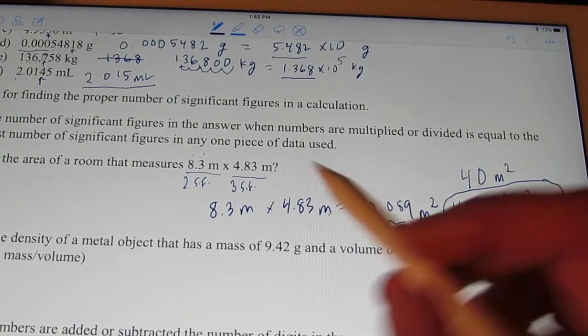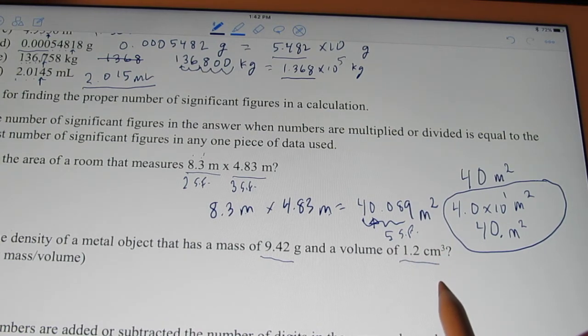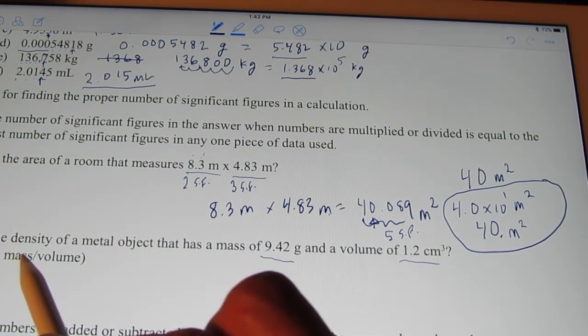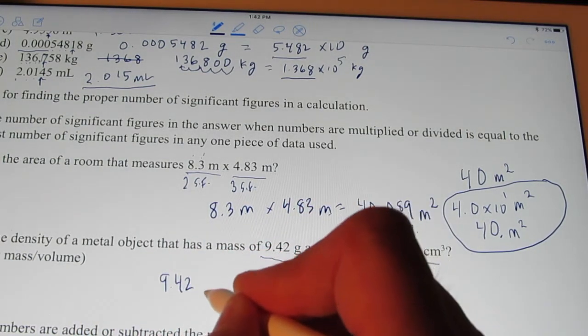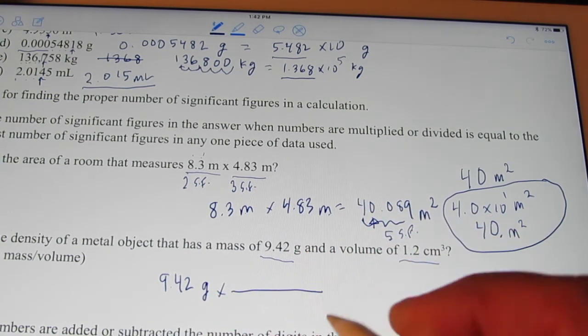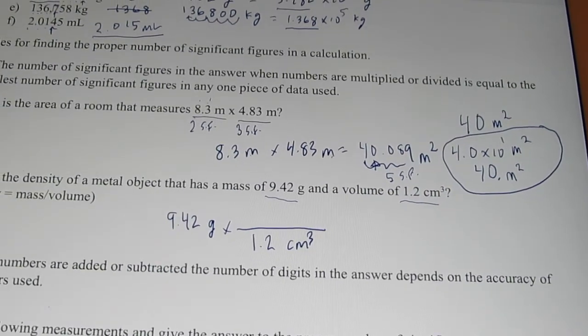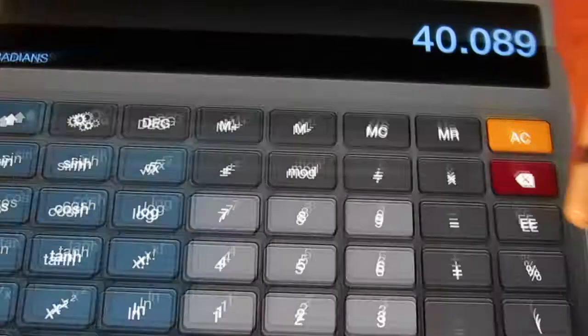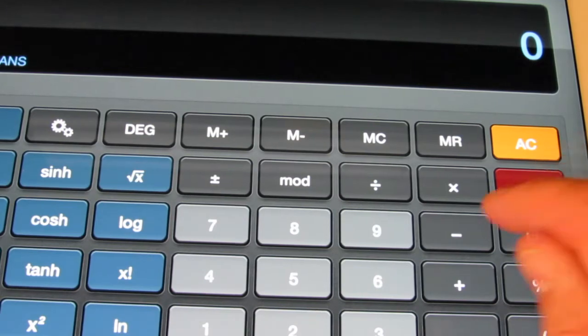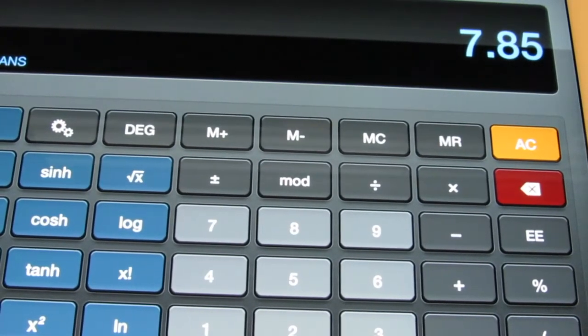So, you were to find the density of a metal object. The mass is 9.42 grams and the volume is 1.2 cubic centimeters. Now, density is the mass of an object divided by its volume. So, let's take 9.42 grams and we'll divide that by 1.2 cubic centimeters. Okay, so let's see. Let's pull out my calculator again. See what we get.